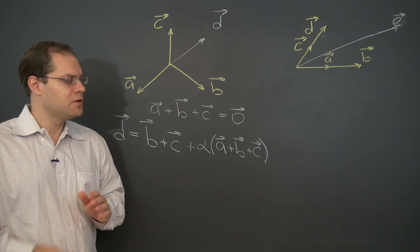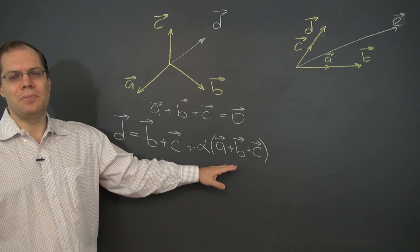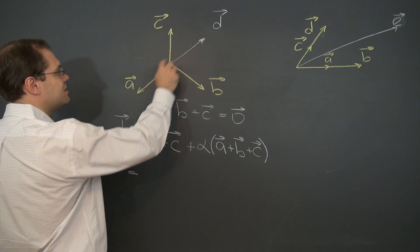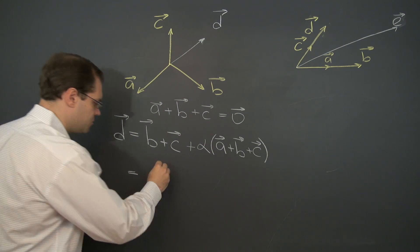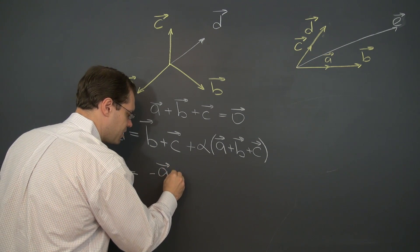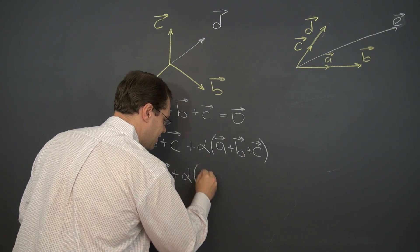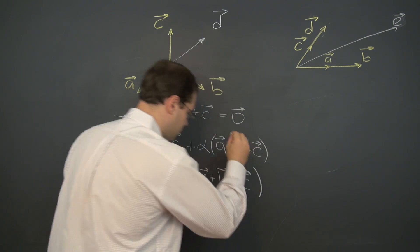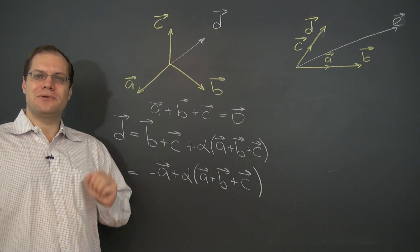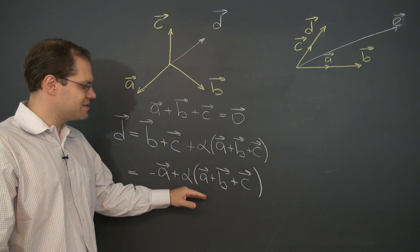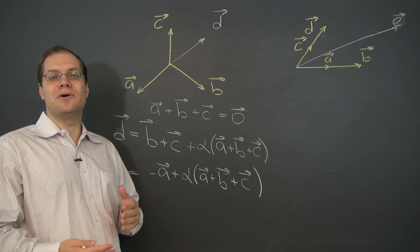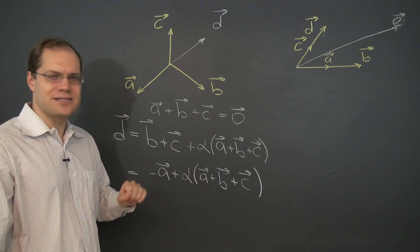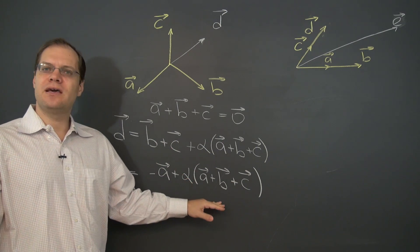So here's the point I'd like to make. You may also say well wait a minute that's not all possible ways of doing it. We could also write it as, because after all d equals minus a. So we can write it as minus a plus alpha a plus b plus c. Okay. So the point that I would like to make is yes on the one hand you're right. This is another way of doing it. So the takeaway is that the totality of linear combinations can be expressed in different ways. This is one way and this is another way.